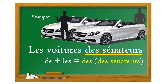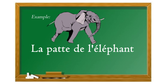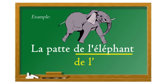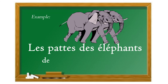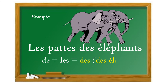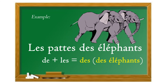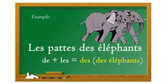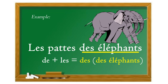Il y a aussi le cas de l'élision au singulier. Par exemple, « la patte de l'éléphant » — l'apostrophe coupe l'article et rapporte bien sûr à l'éléphant, qui est au singulier masculin. Mais au pluriel, on pourrait dire « les pattes des éléphants ». On devrait dire « les pattes de les éléphants », mais ça ne se dit pas, alors on contracte : « de » plus « les » donne « des ».